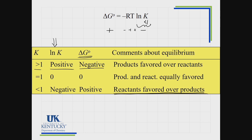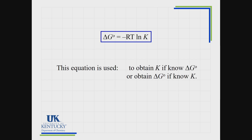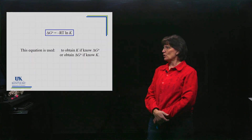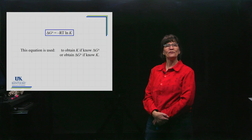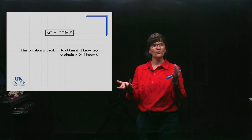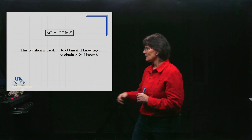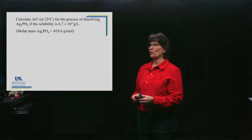The K tells you which way equilibrium will shift to reach equilibrium — Q versus K — and the standard delta G also tells you which way it will shift. So what do we mostly use this equation for? If you know K, you can calculate delta G standard, and if you know the standard delta G, you can obtain K. We'll do a couple of problems using this equation.